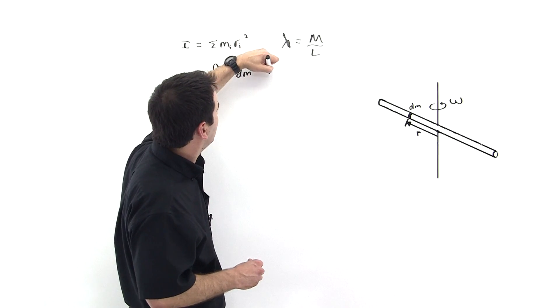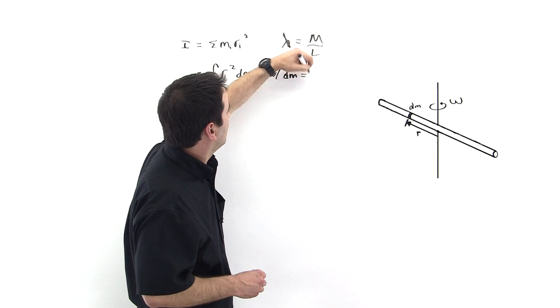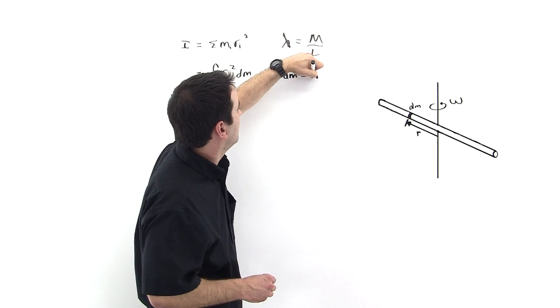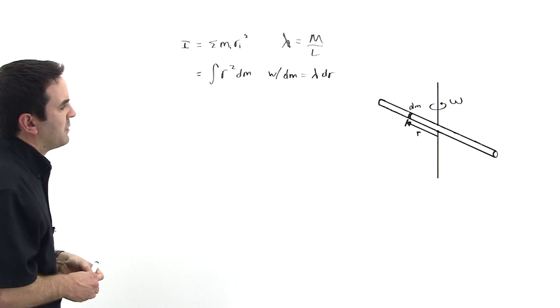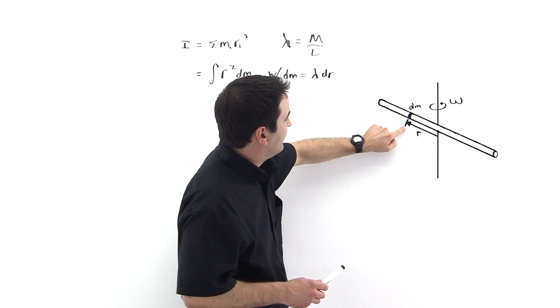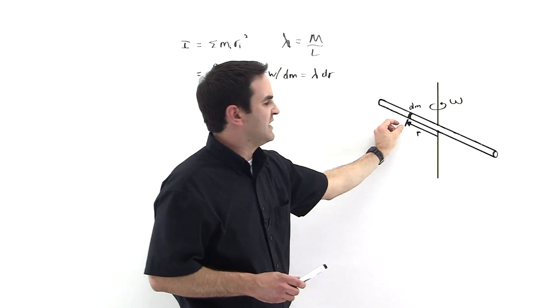Now dm, where dm is equal to lambda times dr, right? Because if this is r and then a little bit more, another little bit change in r is dr.